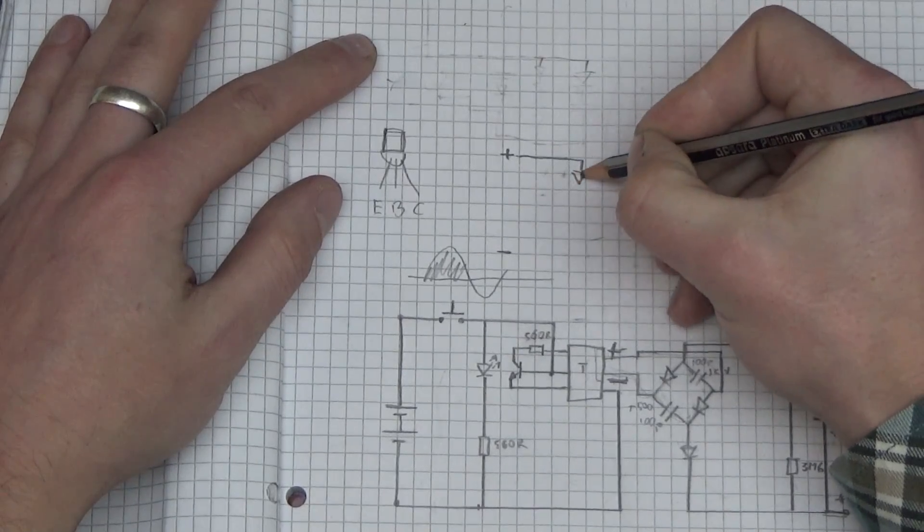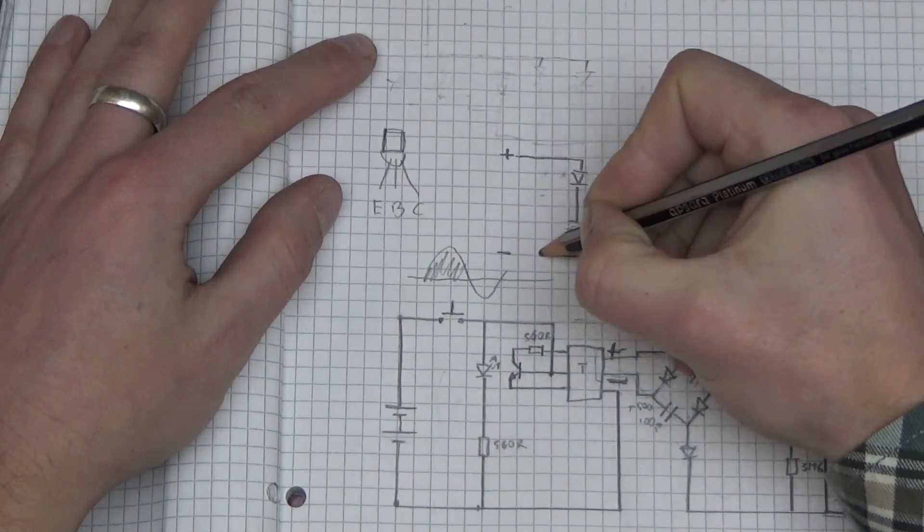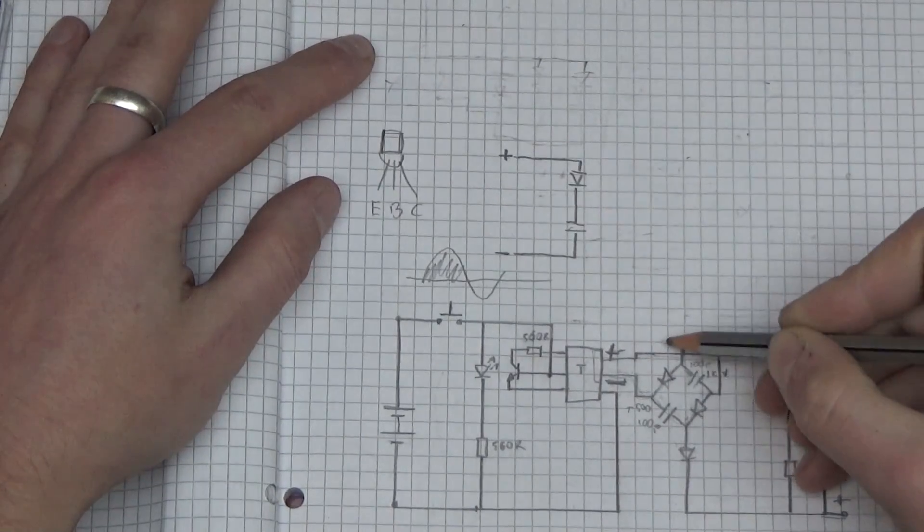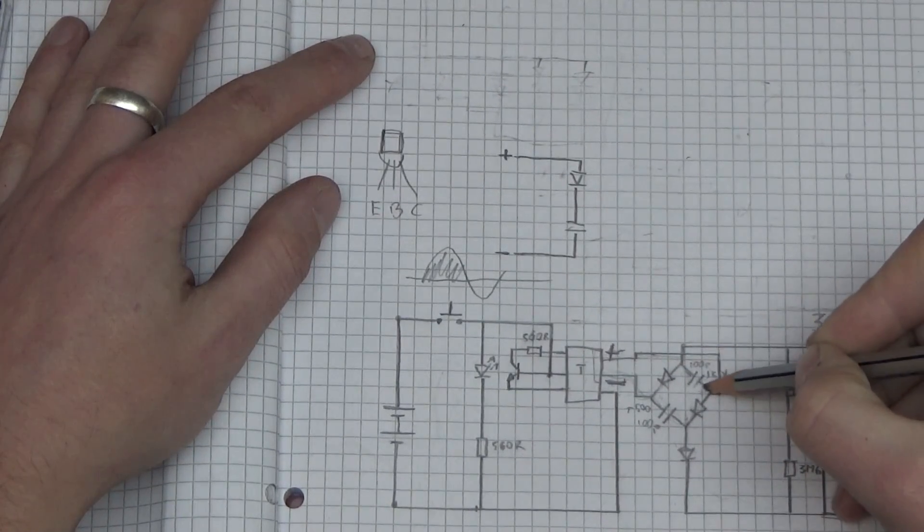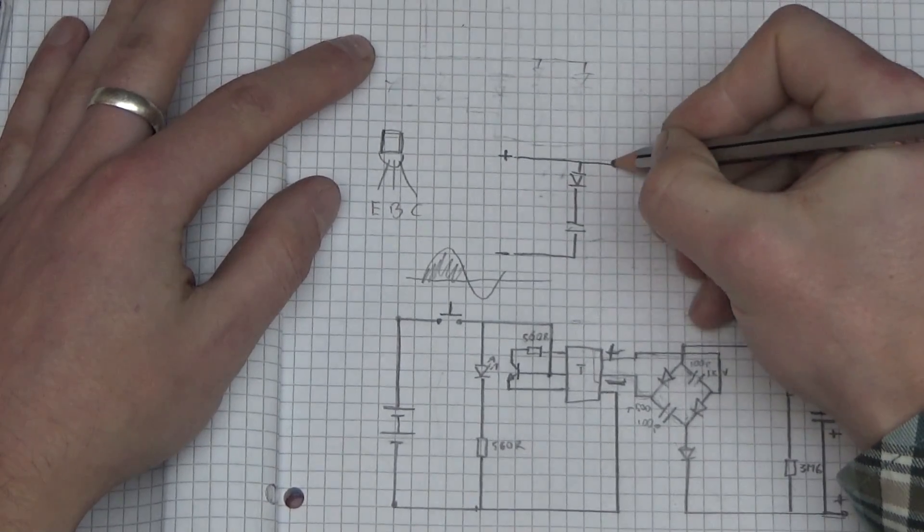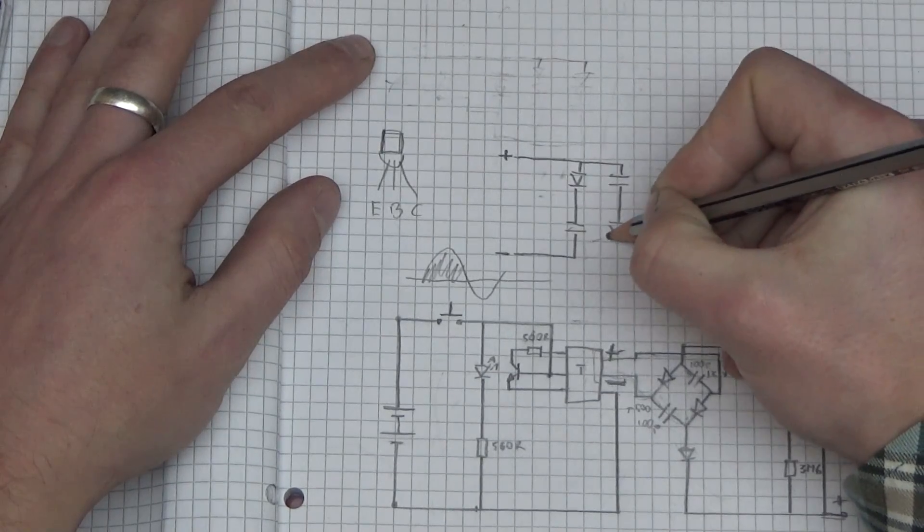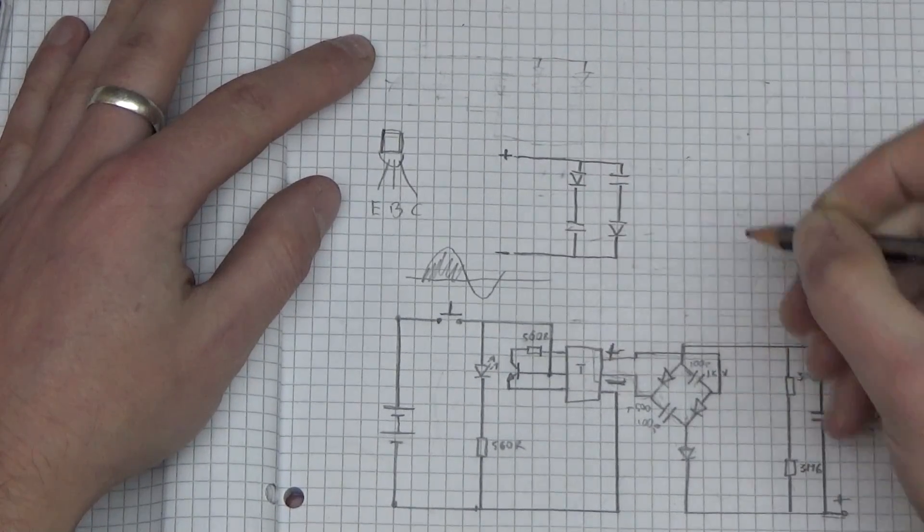The second path is this way, through the cap, through the diode and back into negative. So we've got a cap, a diode, and back to negative.